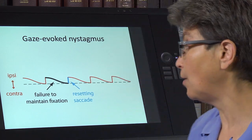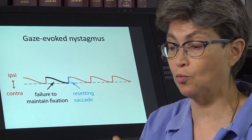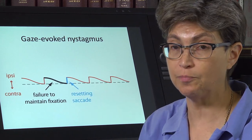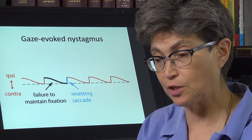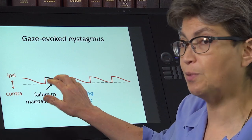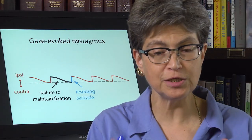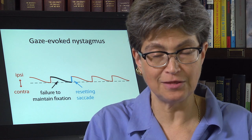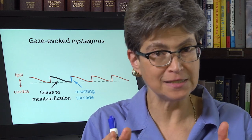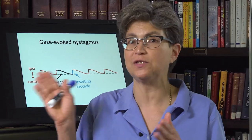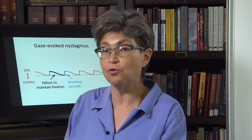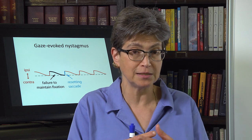This is called gaze-evoked nystagmus. As you look to an eccentric target, if you keep relaxing back to neutral and then saccading back to where you were, that's gaze-evoked nystagmus. This turns out to be the most common form of pathological nystagmus — not physiological nystagmus such as optokinetic nystagmus. Gaze-evoked nystagmus also shows you the importance of actively fixating on a target; it's not automatic that you're able to fixate on an eccentric target — you have to maintain that fixation, and failure to do so gives you gaze-evoked nystagmus.